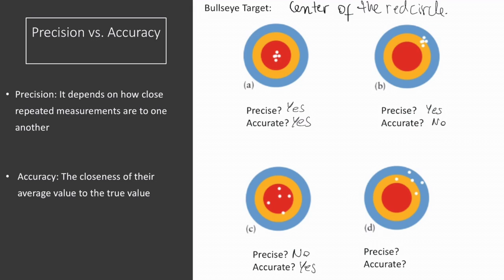In the fourth case, all of the darts are spread away from one another, so they are not precise, and they are also away from the center of the circle, so they are not accurate.